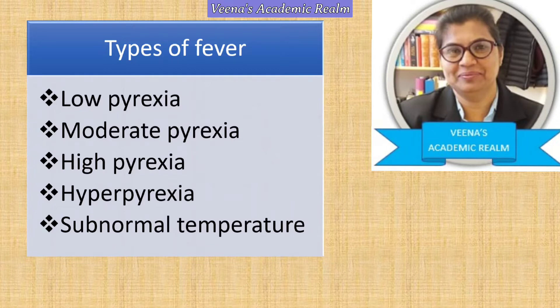Moderate pyrexia is when the body temperature is between 100 to 103 degrees Fahrenheit, or between 37.8 to 39.4 degrees Celsius. High pyrexia is when the body temperature remains between 103 to 105 degrees Fahrenheit, or between 39.4 to 40.6 degrees Celsius.